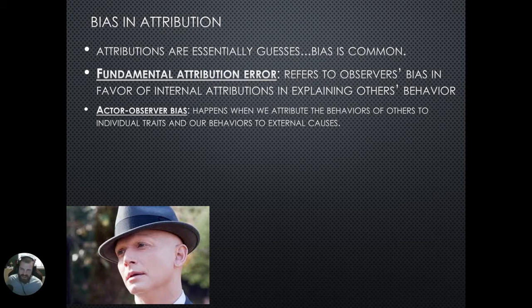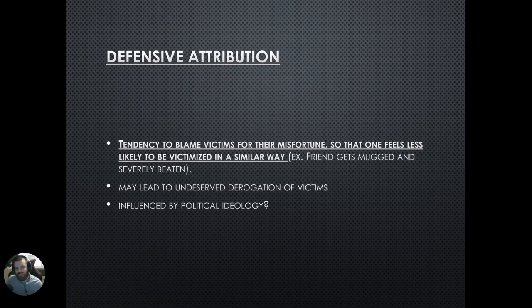The actor-observer bias is what happens when we attribute the behaviors of others to individual traits, whereas we attribute our own behaviors to external causes. A famous version of this is seen with the self-serving bias, which we'll be discussing shortly.